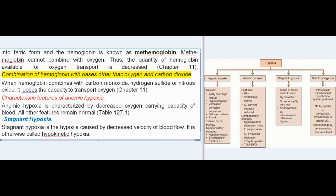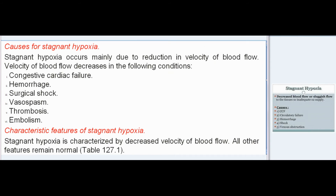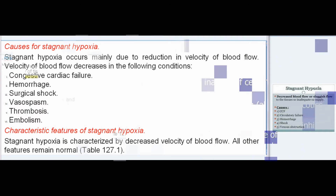Anemic hypoxia is characterized by decreased oxygen-carrying capacity of blood, while all other features remain normal. Stagnant hypoxia is the hypoxia caused by decreased velocity of blood flow; it is otherwise called hypokinetic hypoxia. It occurs mainly due to reduction in velocity of blood flow, which decreases in conditions such as congestive cardiac failure, hemorrhage, surgical shock, vasospasm, thrombosis, and embolism. Stagnant hypoxia is characterized by decreased velocity of blood flow, with all other features remaining normal.